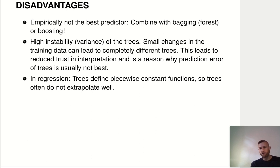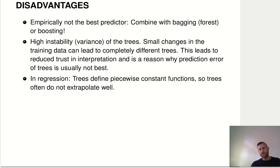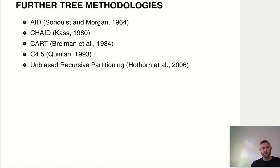A final issue for trees: if we define a regression function that is piecewise constant and we look at new unseen data outside the range of what we have already observed, we are just extrapolating a constant, and in many cases that probably won't be a sensible thing to do. So those were some disadvantages of trees.